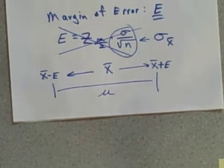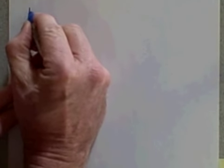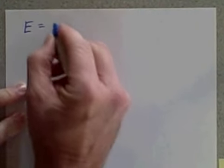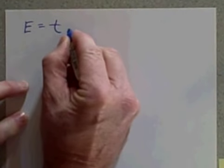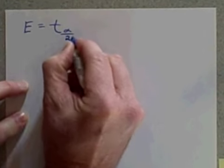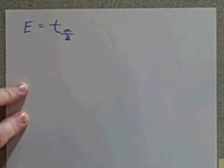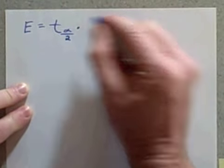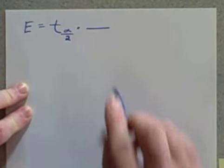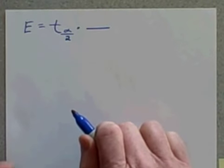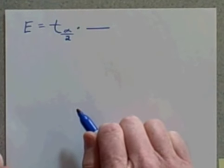Okay, so what's the new formula? Let me show you. The new formula will be this: the margin of error E can be calculated by taking a new critical value that we're going to call t sub α/2.